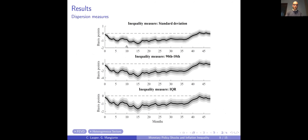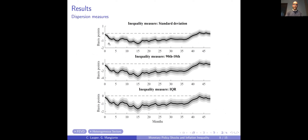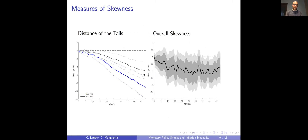Here are the impulse response functions following a 100 basis point increase in the interest rate, with 68% and 95% confidence bands. Following a contractionary monetary policy shock, the standard deviation, the difference between the 90th and 10th percentile, and the interquartile range all significantly and persistently decrease. So monetary shocks decrease dispersion in the economy. To shed light on the main driver, we perform the same empirical specification using the absolute difference between the 90th and 50th percentile and the difference between the left tail and the median.